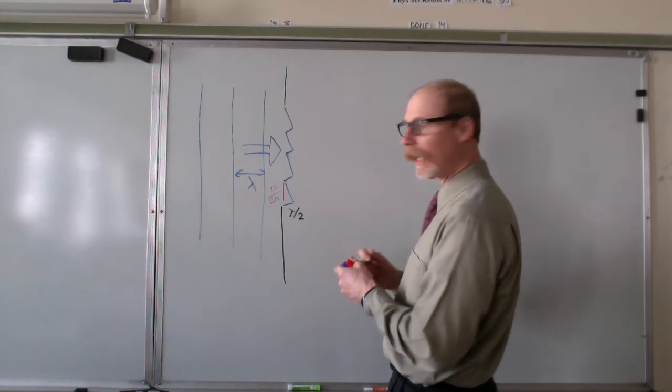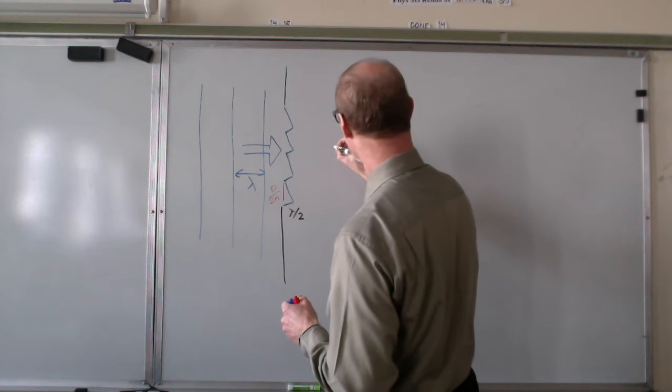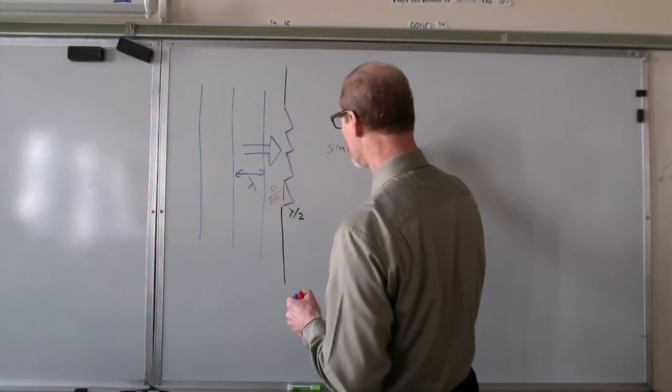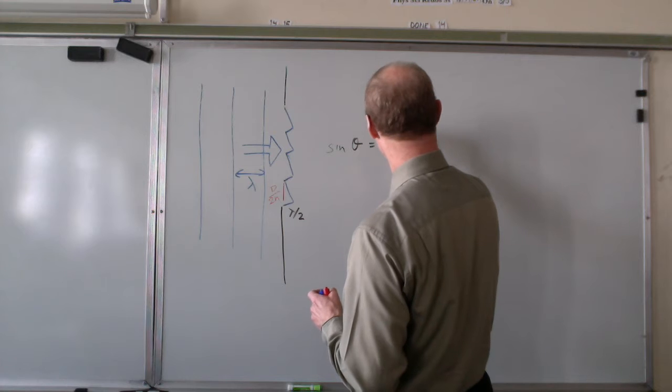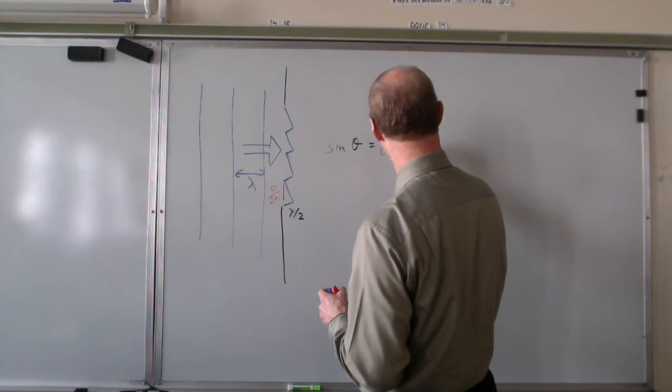So now we have sine theta equals lambda over 2 over d over 2n.